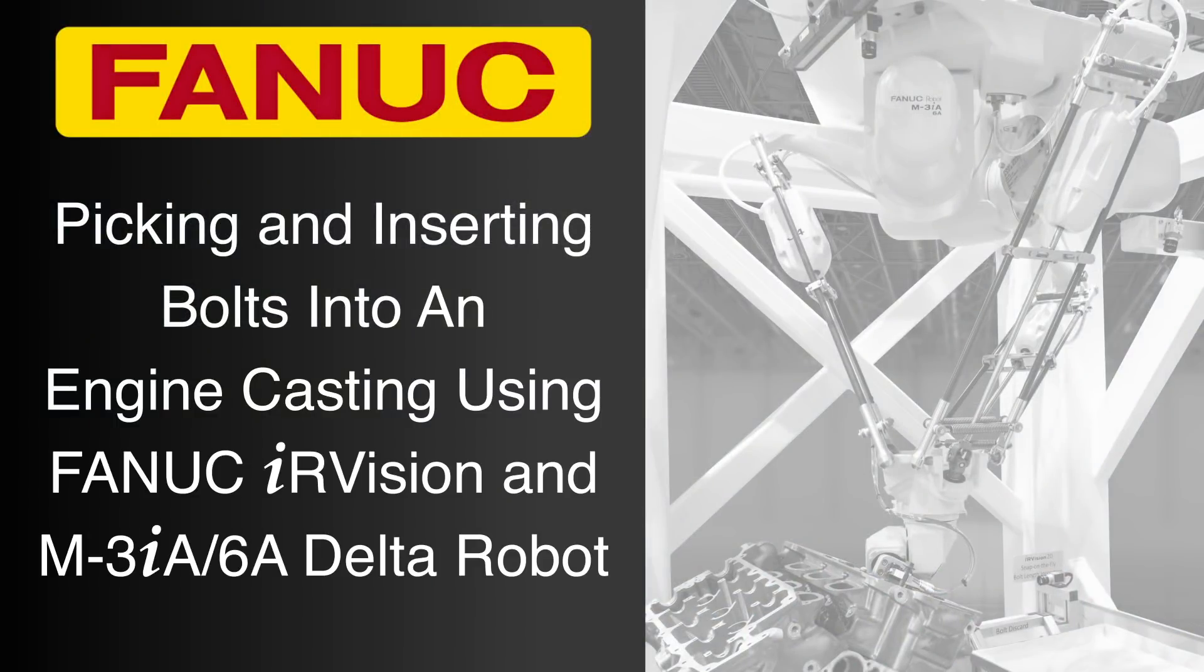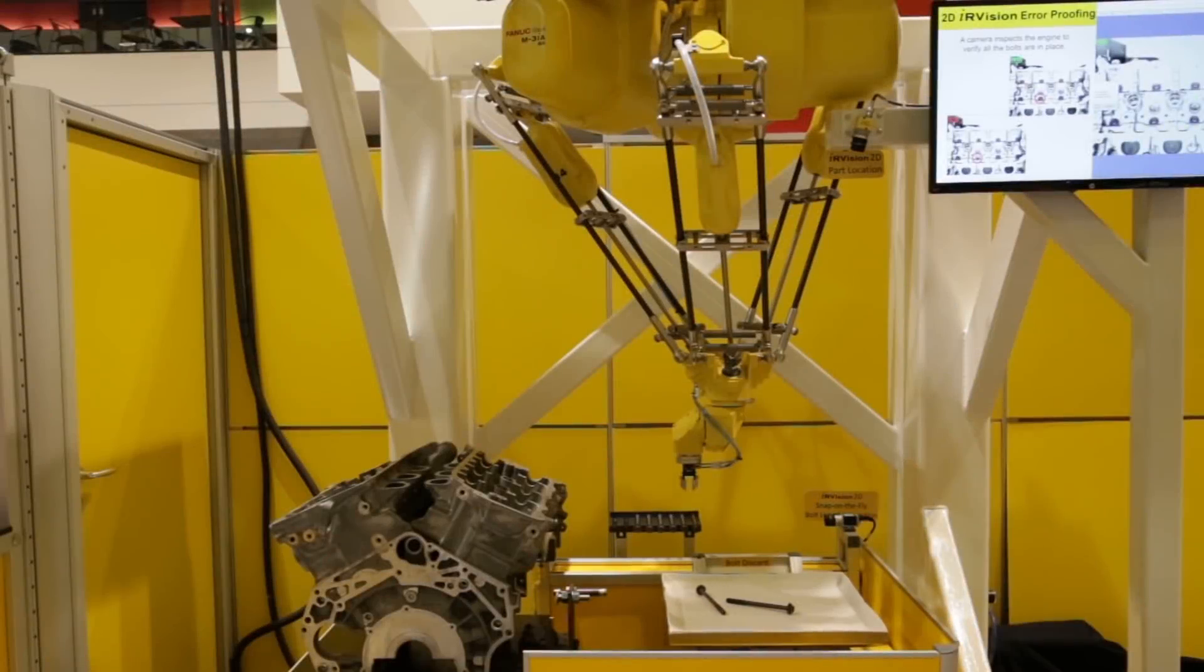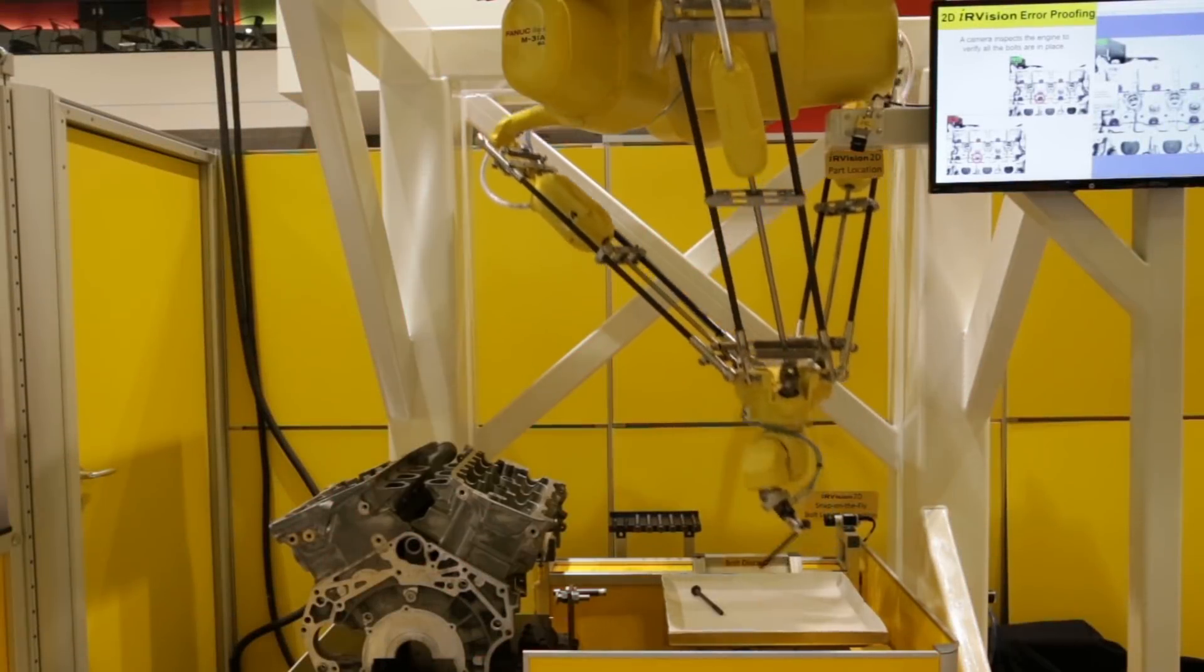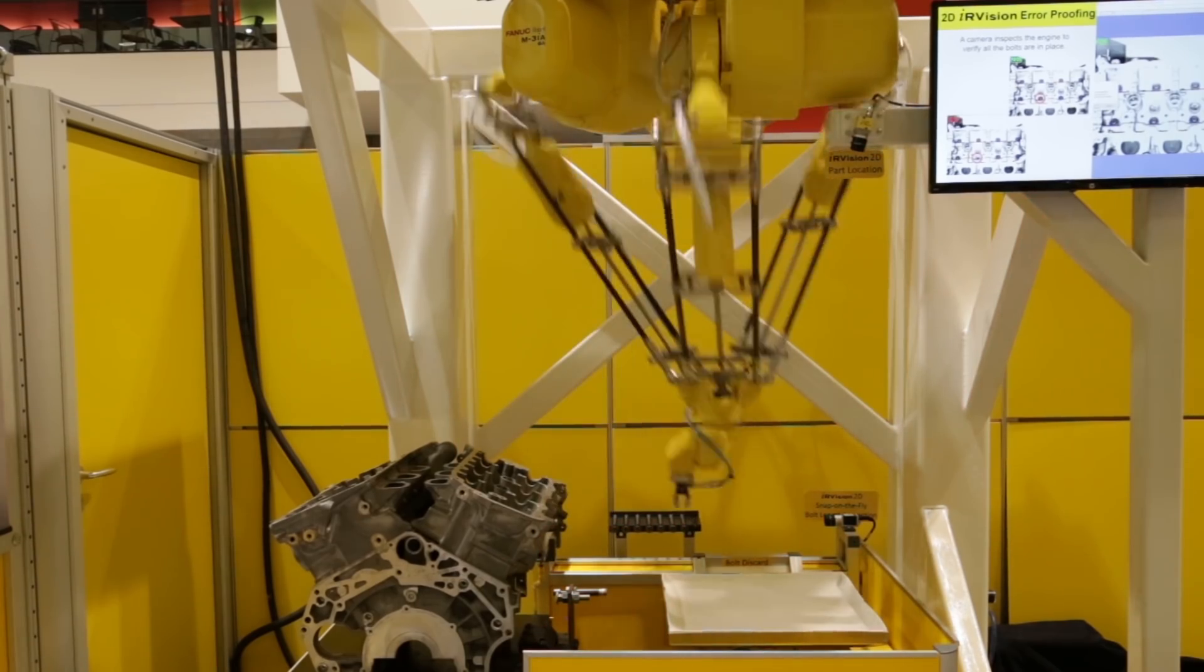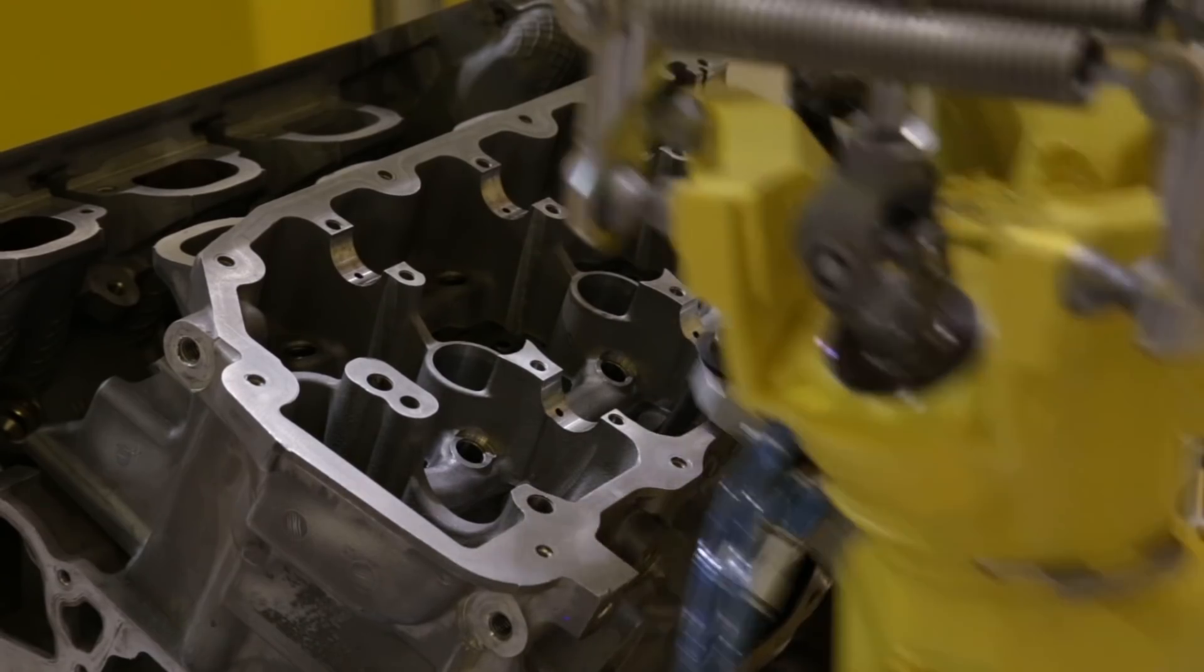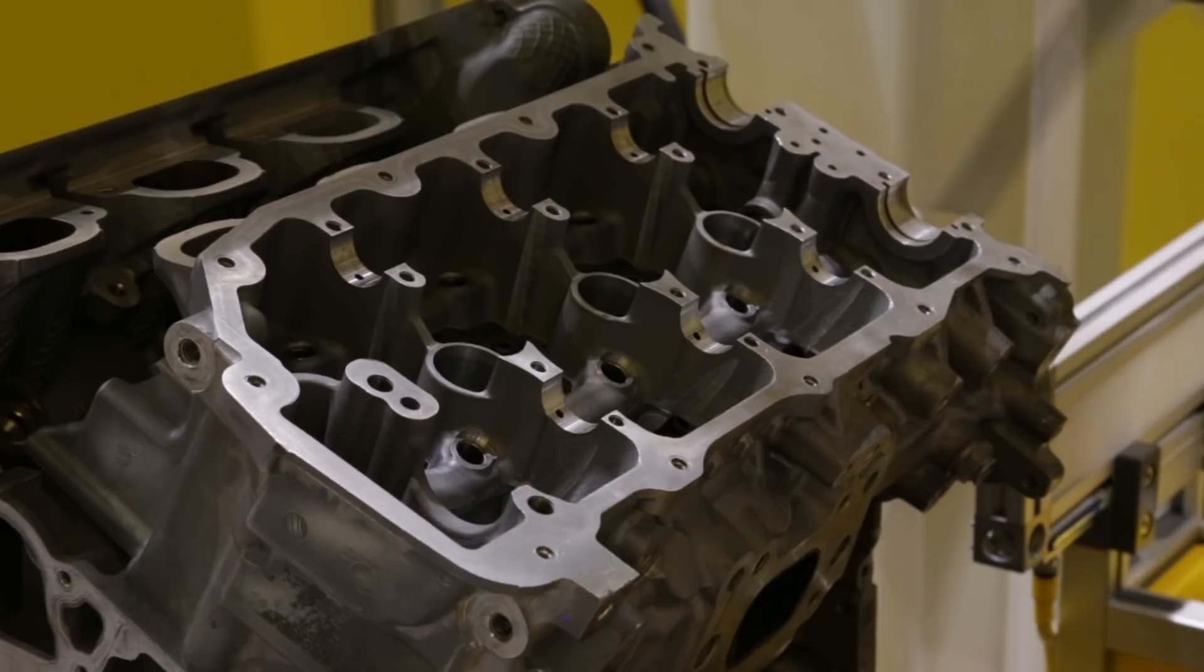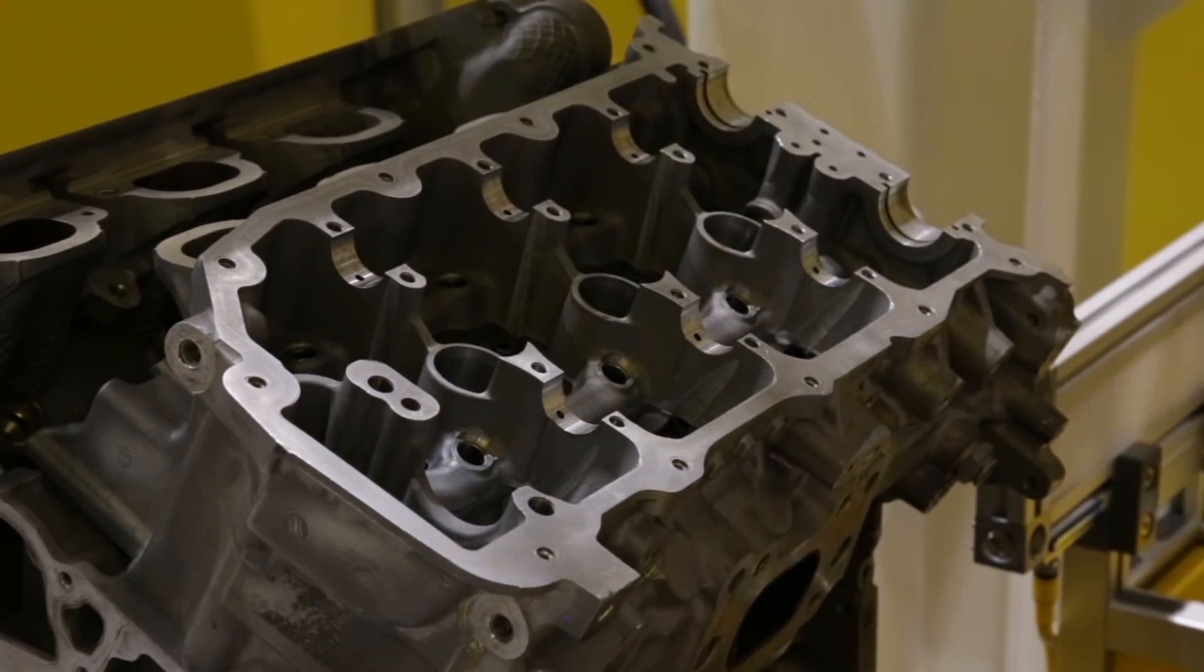FANUC America offers manufacturers a wide range of ultra-fast Delta robots. From 3 to 6 axes of articulation and from 0.5 to 12 kilograms in payload, FANUC's unique Delta robots can be applied in a variety of applications and industries to help maximize production and productivity.